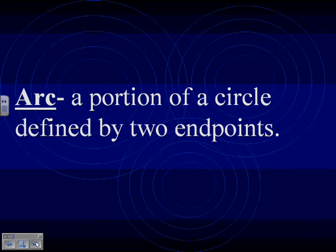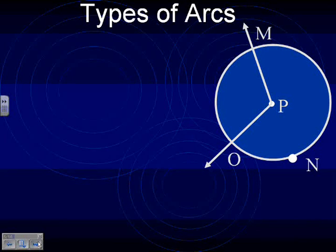I'm going to use that definition for arc, and you all were pretty good with what you were saying earlier. I'm just going to call it a portion of a circle defined by two endpoints. You can also call it like a curved line, part of a circle. We're going to have three types of arcs. So I would like you to draw what you see up there.